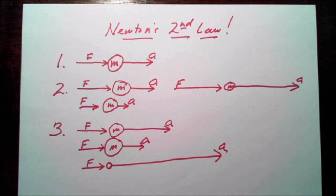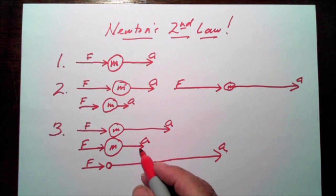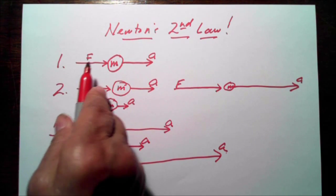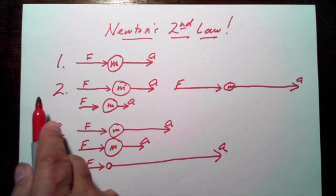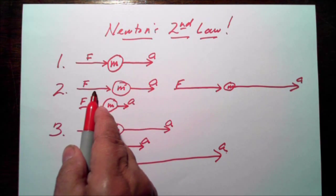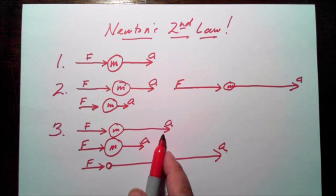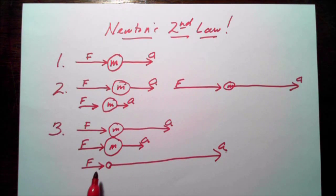So the acceleration is inversely proportional to the mass. Decrease the mass and you increase the acceleration; increase the mass and you decrease the acceleration. That is, in a nutshell, Newton's Second Law of Motion. Three precepts: a force acting on a mass will cause the mass to accelerate in the direction of the force; the acceleration is proportional to the force; and the acceleration is inversely proportional to the mass. Increase the mass, decrease the acceleration. Decrease the mass, and increase the acceleration. And that is Newton's Second Law.